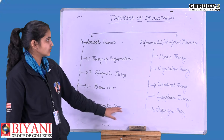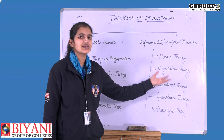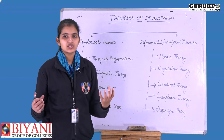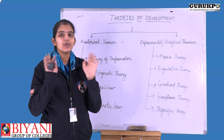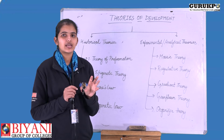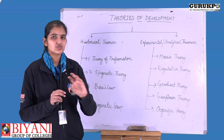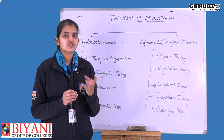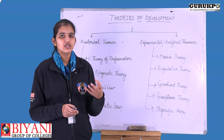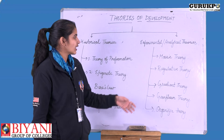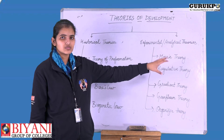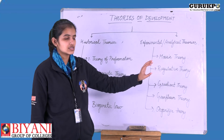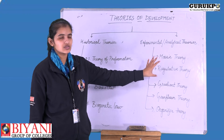Next we have the experimental or analytical theories, which are completely based on experiments. First is the mosaic theory. Mosaic means a collection of small pieces forming something big. This theory states that the zygote has divided its cytoplasm into specific zones, and each zone is responsible for the development of a particular area, cell, or organ — dividing the ovoplasm into regions determining specific structures.